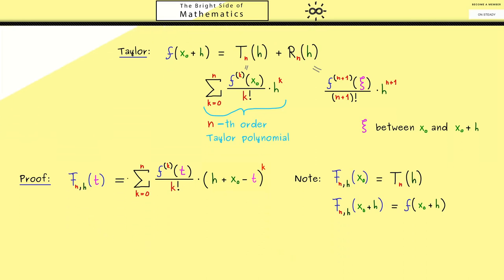At this point you should ask why this is a good definition. The best justification is that it will work in the end. In the proof we want to find an intermediate point xi, and the mean value theorem gives us such a point. Specifically, we will apply the generalized mean value theorem, which needs two functions — the first one is this capital F. So now we define the second function and call it g.